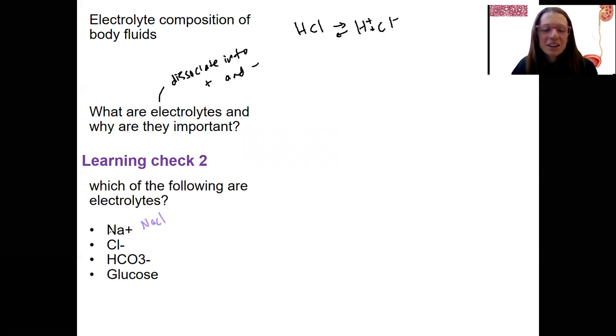So these three, that is an electrolyte. These three are electrolytes. They all have a charge to them. Glucose does not dissociate in water. It dissolves in water, but it doesn't have a charge then. So these electrolytes, because they dissociate into the positive and negative, they are going to contribute greatly to the osmotic gradient of our cells.